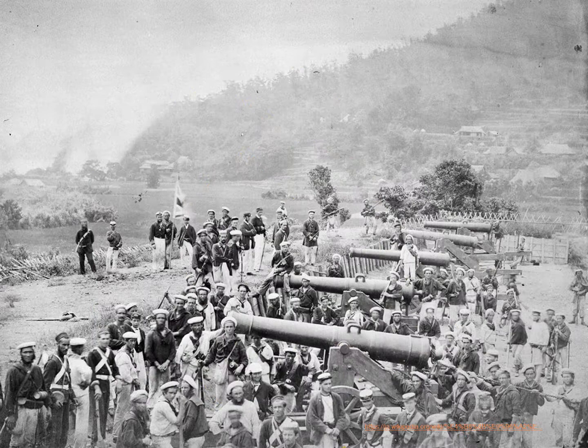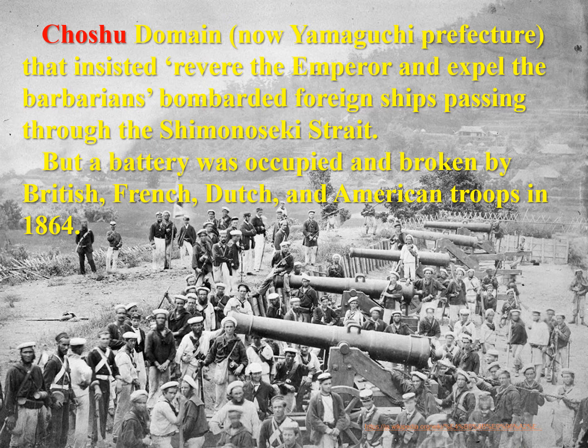The Choshu domain, which insisted on Riviera the Emperor and expelled the barbarians, bombarded foreign ships passing through the Shimonoseki strait, but the battery was occupied and broken by British, French, Dutch, and American troops in 1864.